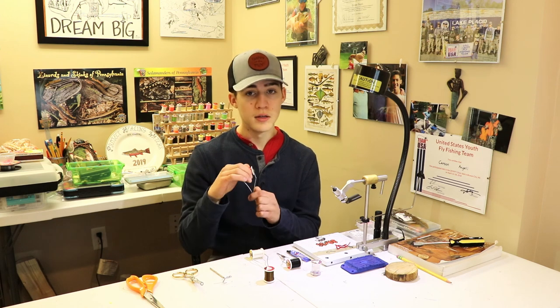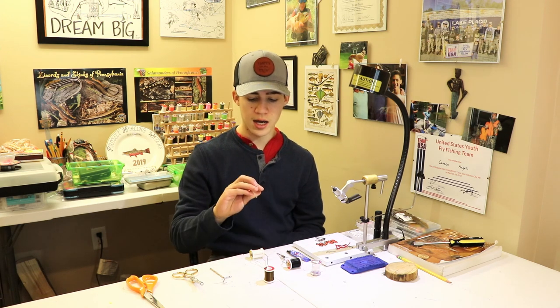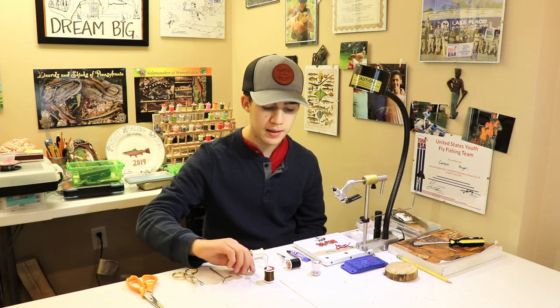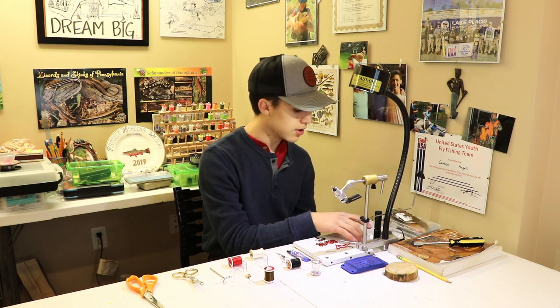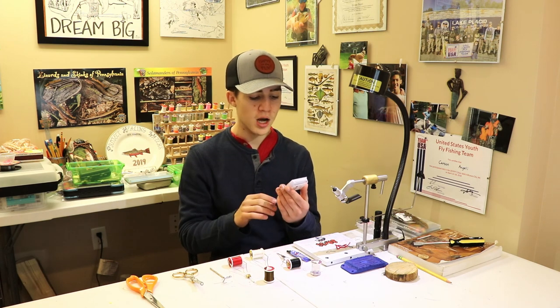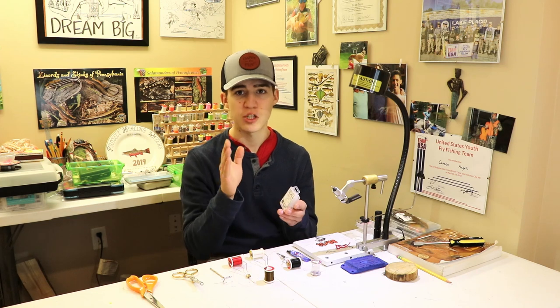Also I like to use red, still ultra thread 70 odd. Works really well on imitating both midges and worms if you use the right size of hook. The hook I'm going to be using, talking about hooks, we're going to be using a size 16 competition barbless scud slash pupa.